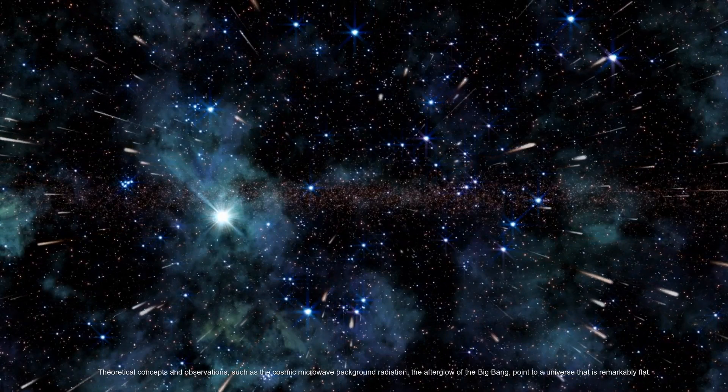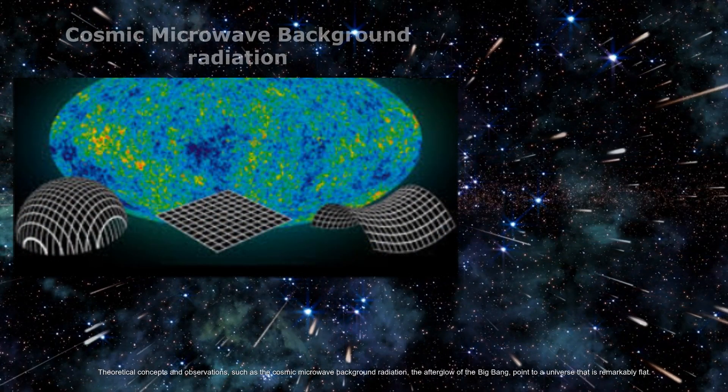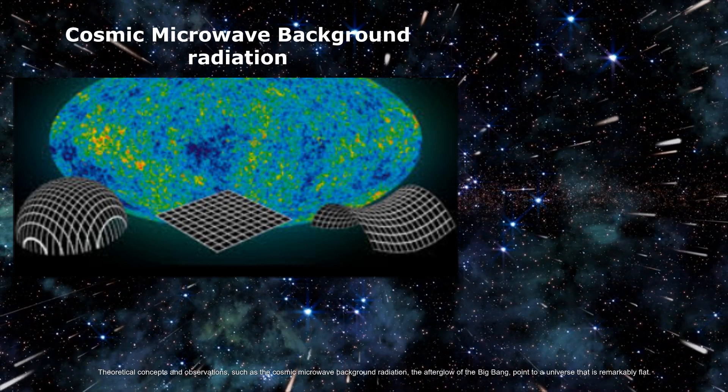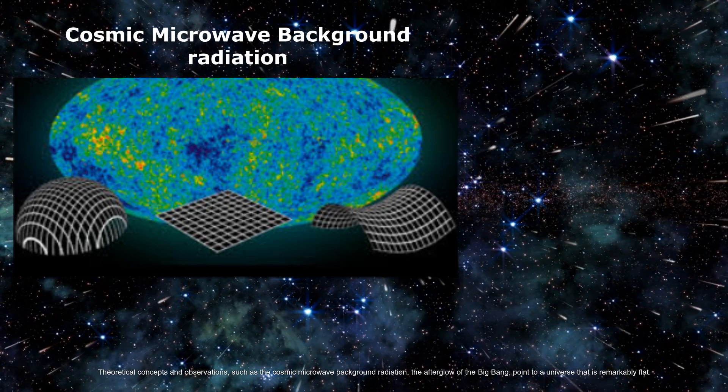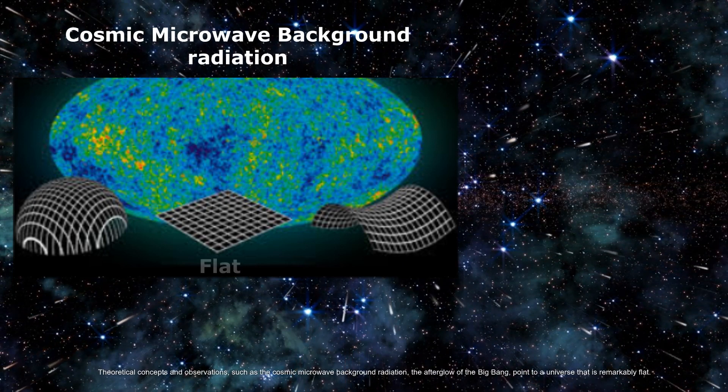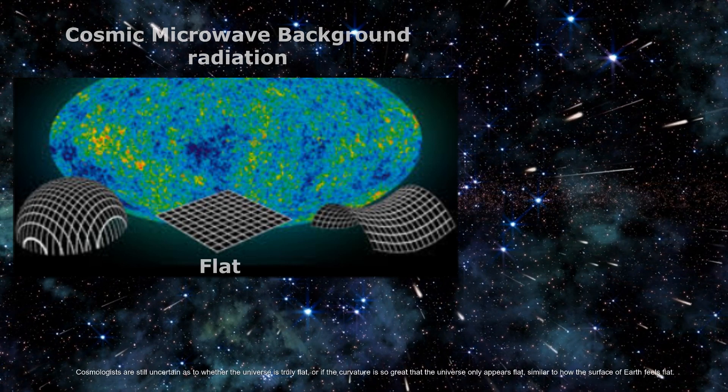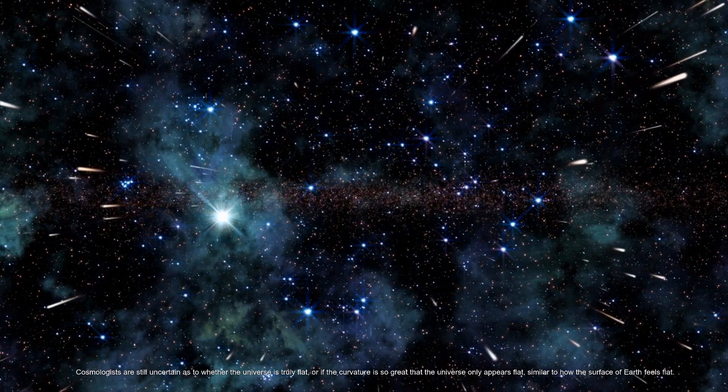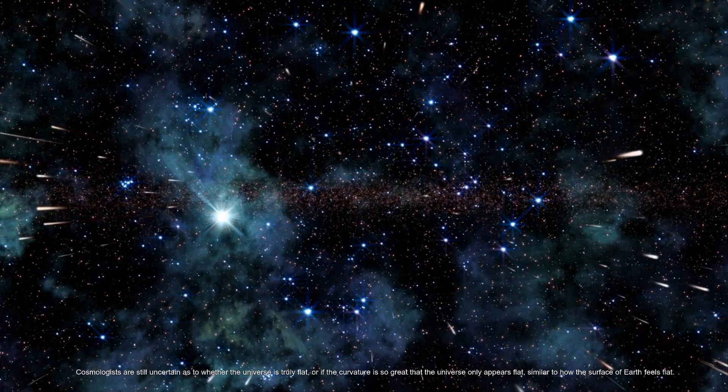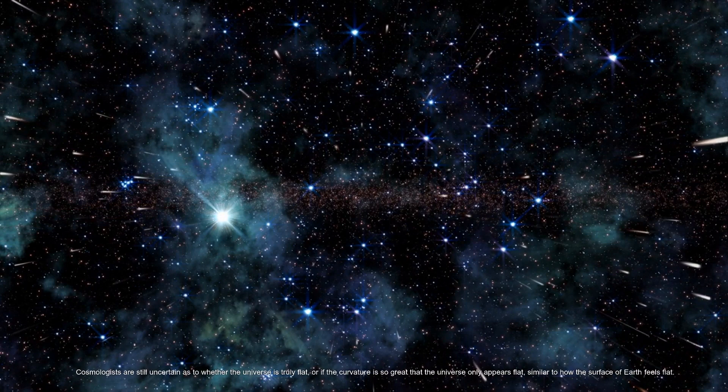Theoretical concepts and observations, such as the cosmic microwave background radiation, the afterglow of the Big Bang, point to a universe that is remarkably flat. Cosmologists are still uncertain as to whether the universe is truly flat, or if the curvature is so great that the universe only appears flat, similar to how the surface of Earth feels flat.